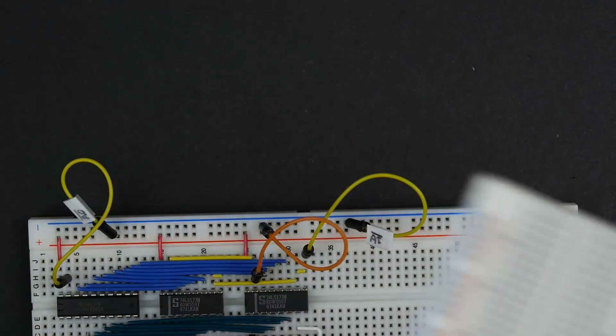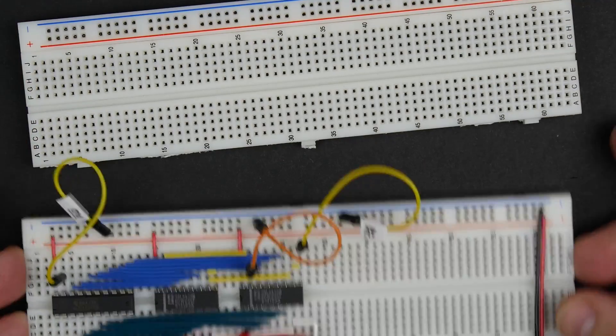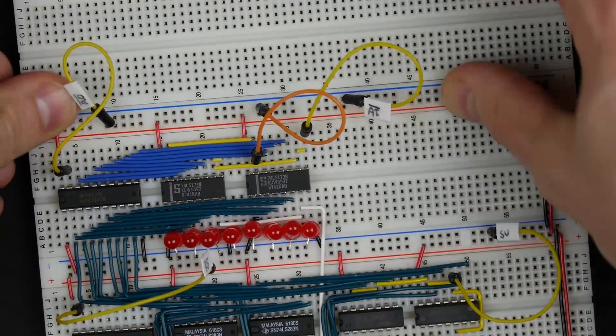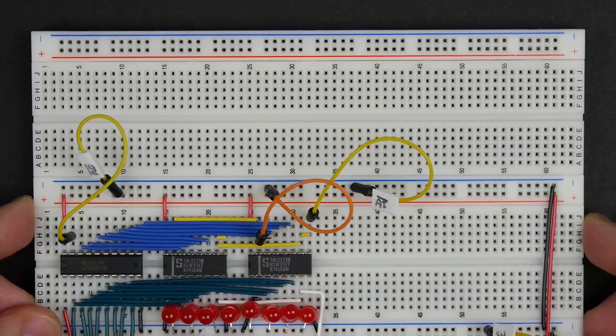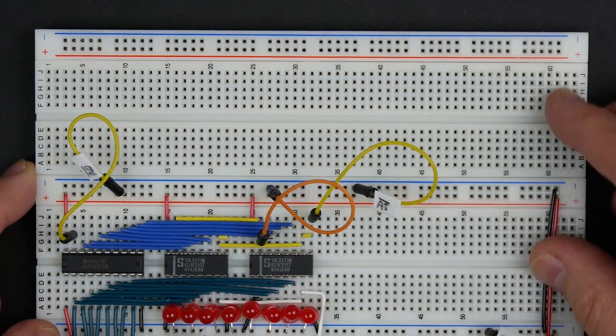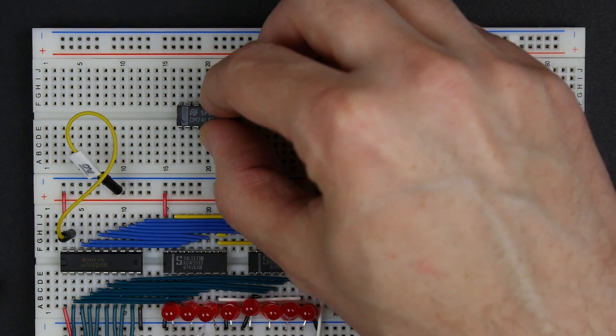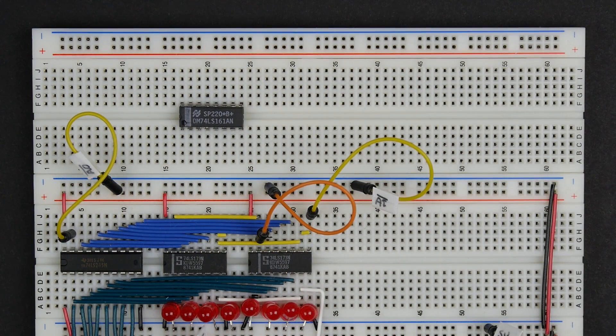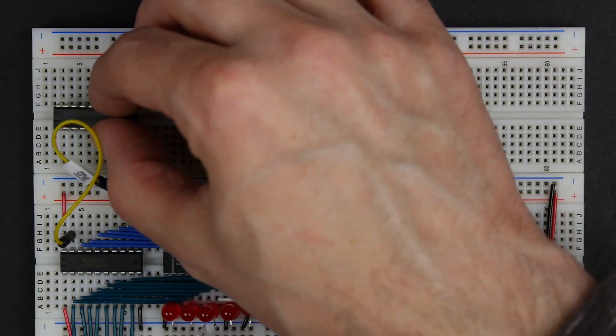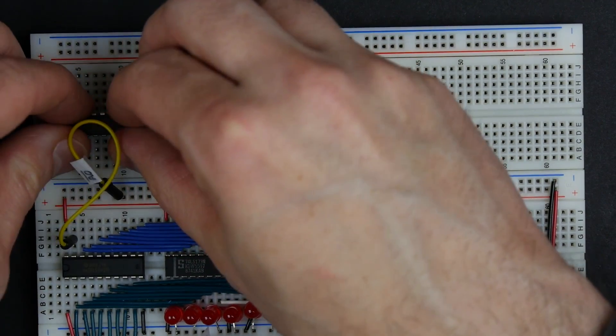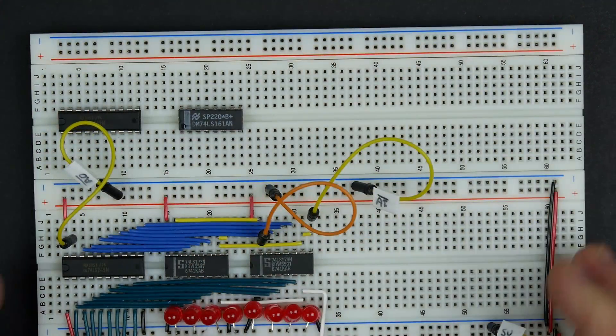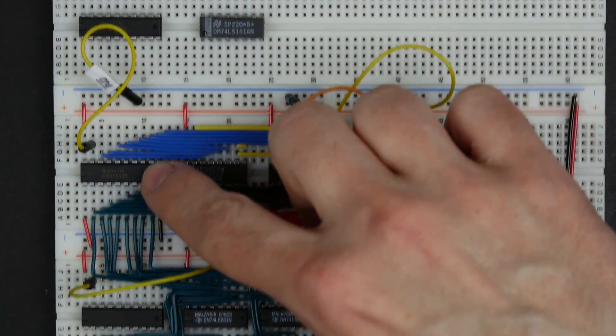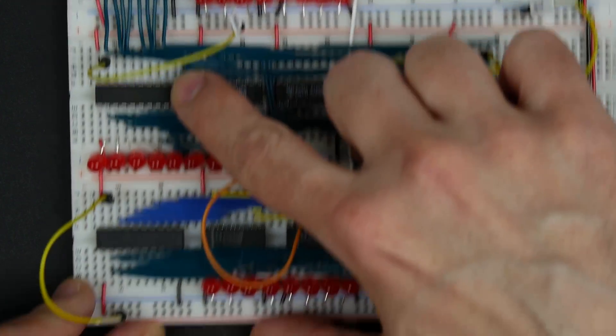Take off that strip and connect these here like that, and just above the A register I'll build our program counter. Start with the 74LS161, which is our 4-bit counter, and then we also have the 74LS245, which is our tri-state buffers. That's the same chip we're using for the A register, for the ALU, and the B register.